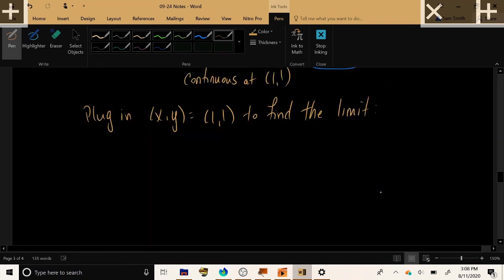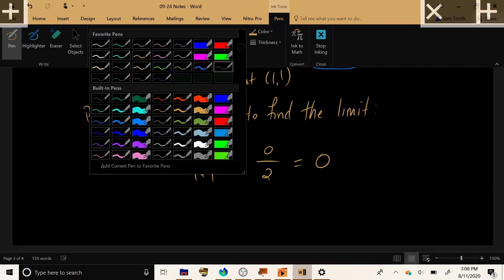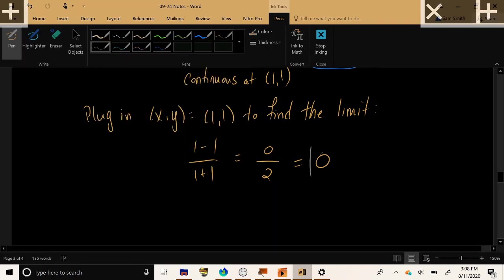Now, as a result of doing that, 1 minus 1 in the numerator, 1 plus 1 in the denominator, gives us 0 over a non-zero number, which simplifies to 0 itself, which is a real number. And, as a result, it is the value of our limit, and our final answer.